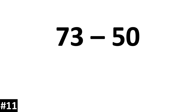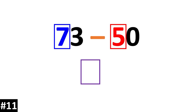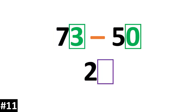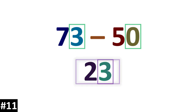73 minus 50. That is 7 10s minus 5 10s, which is equal to 2 10s. We look to the ones: 3 minus 0 is 3. So our answer is 23.